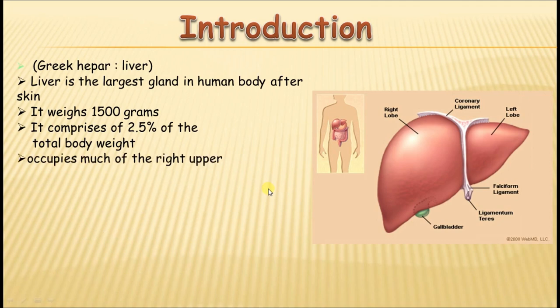It occupies the right side of the abdomen — the right upper part, the right hypochondrium — and extends into the epigastric region, crosses the midline, and also extends to the left side.